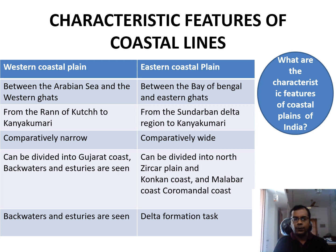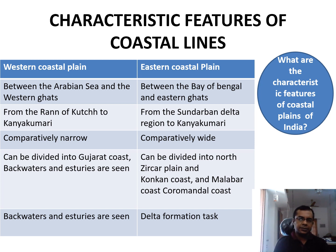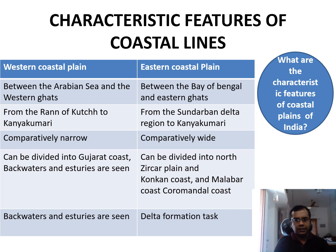The Western Coast Plains are comparatively narrow. The Western Coast Plains can be divided into Gujarat Coast, Northern Srikkar Plains, Konkan Coast, and Malabar Coast, and the Eastern side has the Coromandel Coast. Backwaters and estuaries can be seen in the Western Coast Plains, whereas in the Eastern Coast Plains, delta formation can be noticed.